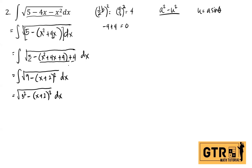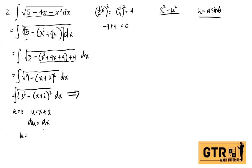It is now in the form a squared minus u squared, so we can use the substitution u equals a sine theta. Our a squared is 9, so a equals 3, and our u is x plus 2. Solving for dx: the differential of x plus 2 is dx, so du equals dx. We set x plus 2 equals 3 sine theta. Let's draw the right triangle.